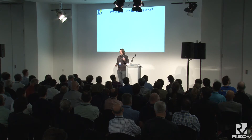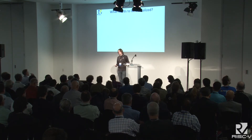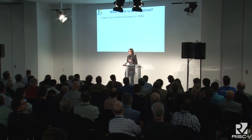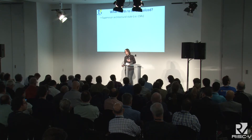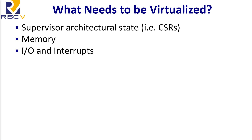What needs to be virtualized to ensure the guest OS and its applications can't tell they're being virtualized, and to do so in a reasonably performant way? First, you need to virtualize the processor state that supervisor mode sees — the CSRs that supervisor mode uses to manage exceptions and virtual memory, and the handful of instructions to manage page tables and exceptions. Then the big one is the memory system, and finally you need to virtualize IO and interrupt mechanisms. The hypervisor extension provides enough functionality to emulate devices and interrupts, though this is mostly a platform-level issue.